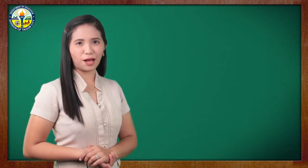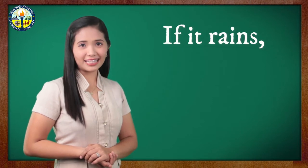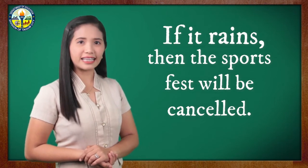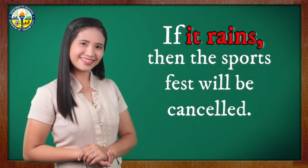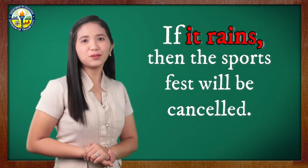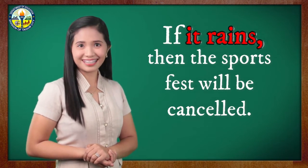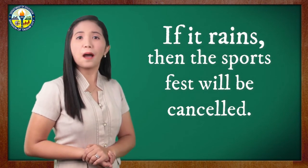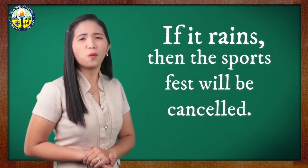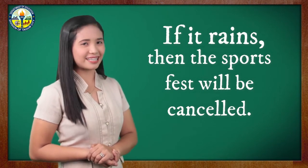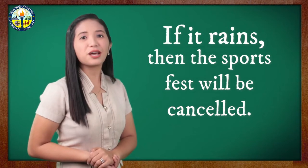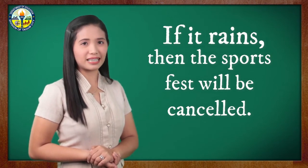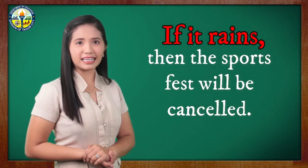Let's take this example: If it rains, then the sports fest will be cancelled. The P clause in this statement is 'It rains,' while the Q clause is 'The sports fest will be cancelled.' Based on the definition, what clause stands for the hypothesis? Very good! The P clause. The hypothesis of the statement is 'It rains,' since it is the P clause.